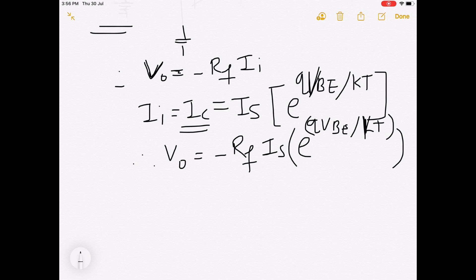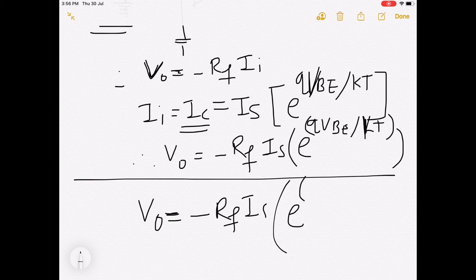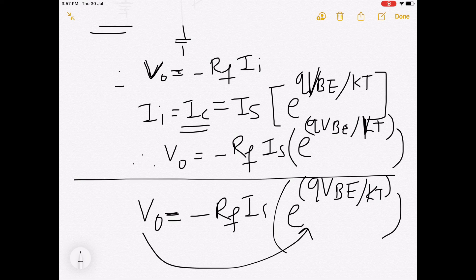I am directly telling you that here your output voltage is anti-log of input voltage. From this equation you will know that Vo equals minus Rf times Is times e raised to qVbe upon kT. e raised to is nothing but the anti-log.